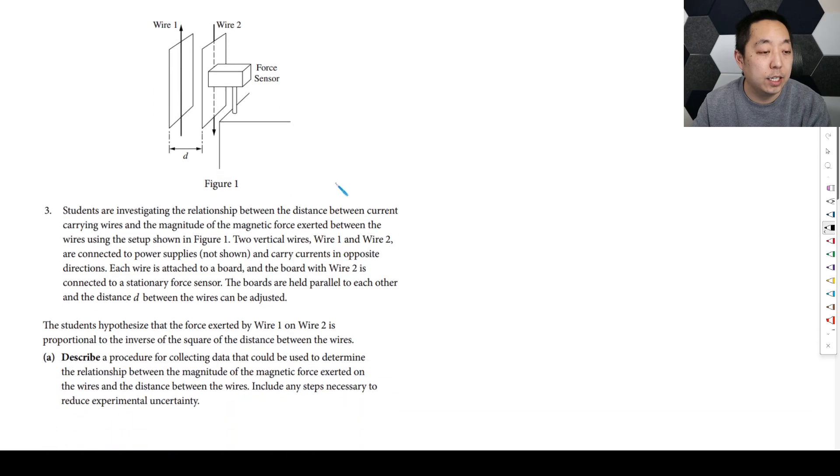So let's dig into this one. Students are investigating the relationship between the distance between current carrying wires and the magnitude of the magnetic force between the wires in the setup shown. Two vertical wires, wire one and two, are connected to power supplies and carry currents in the opposite direction. Each wire is attached to a board and the board with wire two is connected to a stationary force sensor. A lot of times they'll give you the equipment when they're doing this. The boards are held parallel to each other and the distance D between them can be adjusted. The students hypothesize that the force exerted by wire one on wire two is proportional to the inverse of the square of the distance between the wires. So we're going to vary the distance and measure the force.